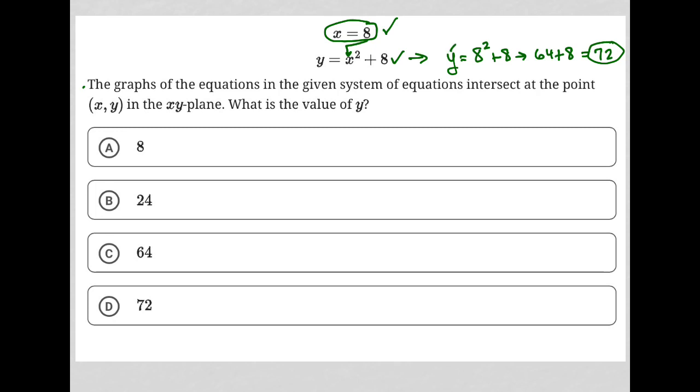Well, we just found it, right? Because all this ends up being y is equal to 72. So in essence, we know the question told us x is equal to 8. We found that y is 72, so we know the point of intersection is 8 comma 72. None of that matters though, because we found y equals 72. That's what the question is asking for. So choice D is the correct answer here.